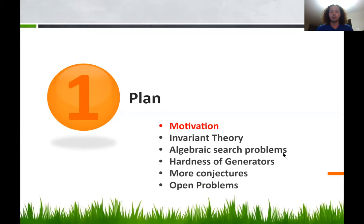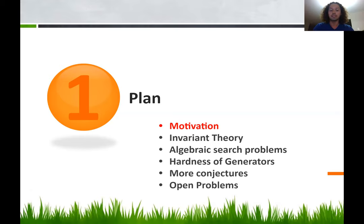The plan for the talk will be the following: I'll start with some motivation on why we should study invariant theory, then talk about invariant theory, then move on to describe algebraic search problems, and describe the problem of generators proposed by Ketan in his GCT5 paper, and disprove one of his conjectures. Then I'll state more conjectures and give more open problems.